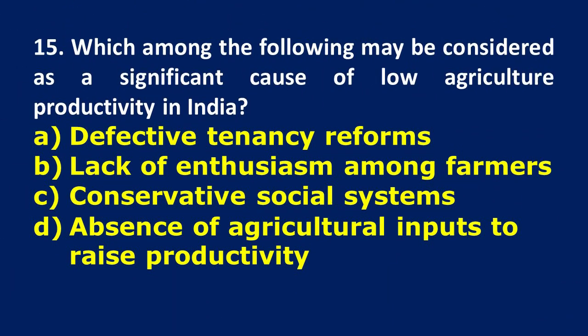Last question: which among the following may be considered as a significant cause of low agriculture productivity in India? Option A: Defective Tenancy Reforms, option B: Lack of Enthusiasm Among Farmers, option C: Conservative Social Systems, option D: Absence of Agricultural Inputs to Raise Productivity. The most suitable answer is option A — Defective Tenancy Reforms.